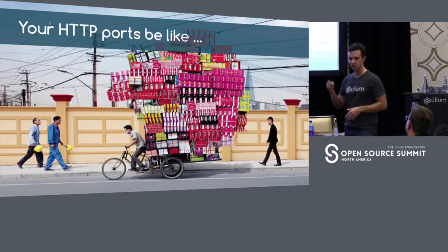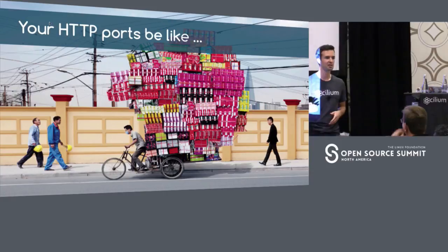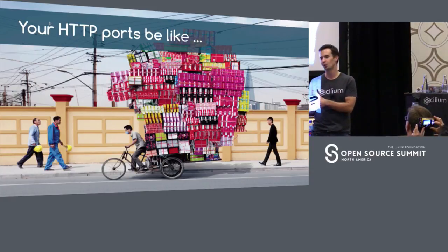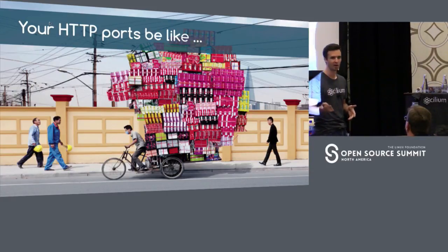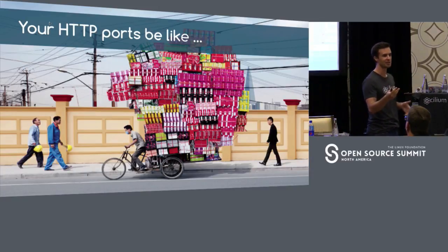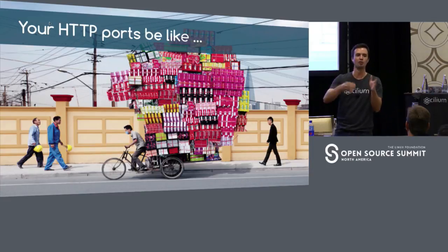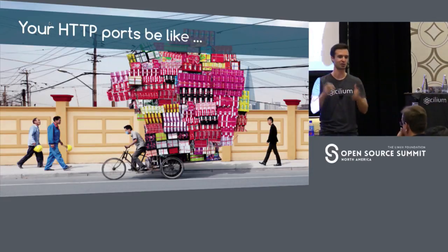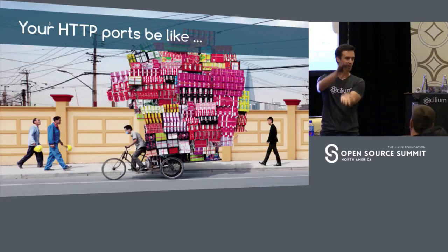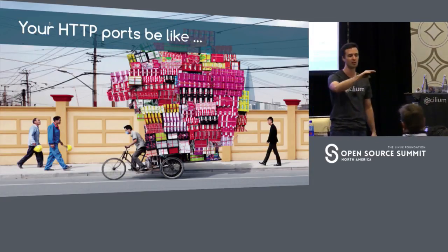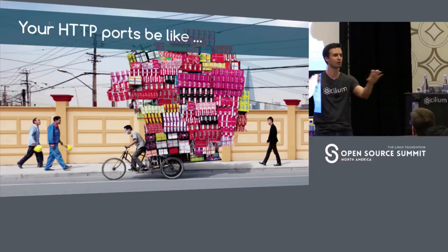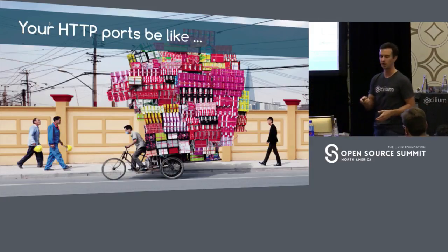If you're looking at modern cloud-native applications, they typically use a protocol such as gRPC, REST, Kafka, and so on. Most of the communication between these containers or microservices is over port 80 — like REST or gRPC — which means that as a network engineer, as you open up that port, you basically open up everything. Whoever can talk to the service can basically use all of the functionality. And this is a problem.